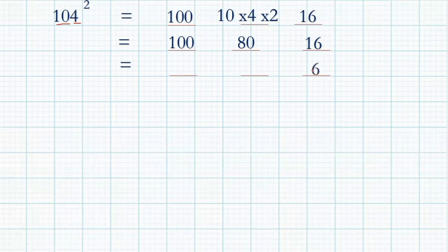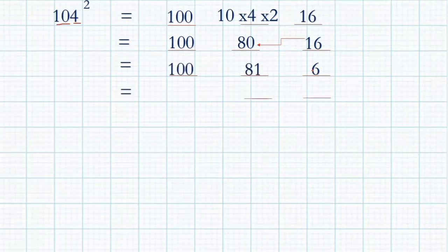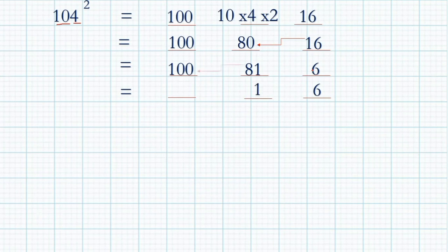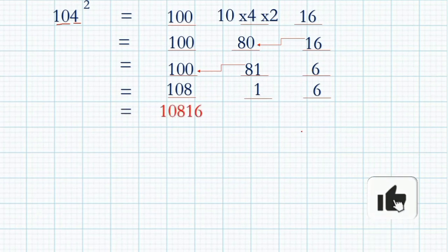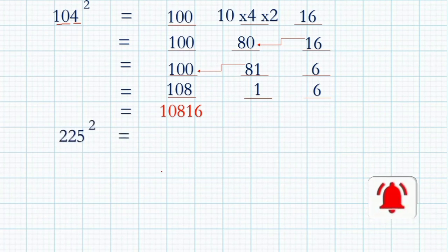That gives 16 in the last, ten into four into two is 80 in the middle, and first is 100. Again, only the ones place digit you write down, and the tens place digit you add with 80 — 80 plus 1 is 81 in the middle. Then 8 you add with 100 — 100 plus 8 is 108. So the answer is 10816.